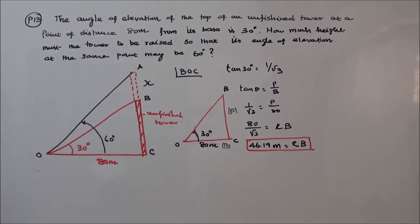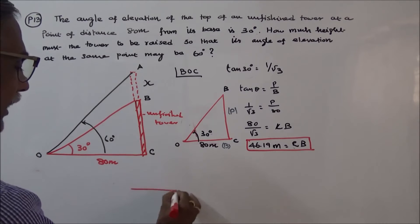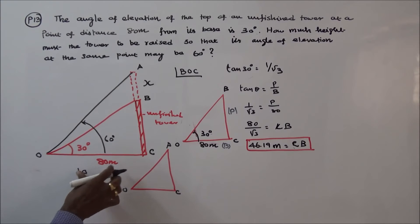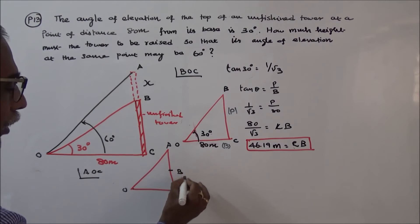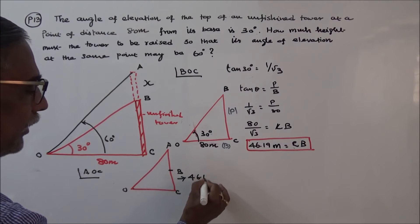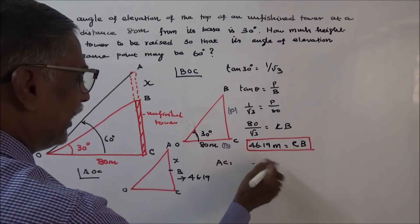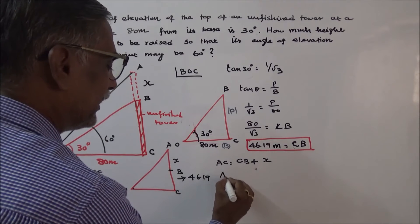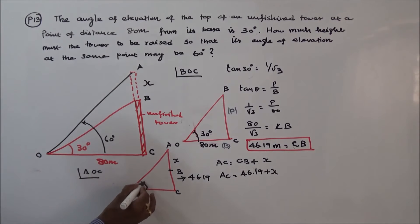Next I take the other triangle, triangle AOC. BC is equal to 46.19 and this additional height is X. Therefore AC equals CB plus X, that is 46.19 plus X. The acute angle here is 60 degrees.